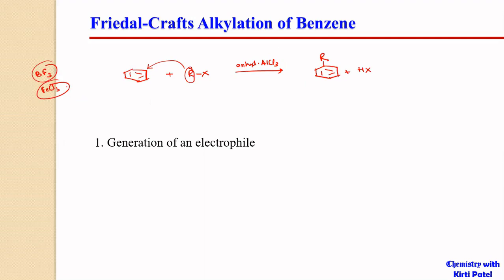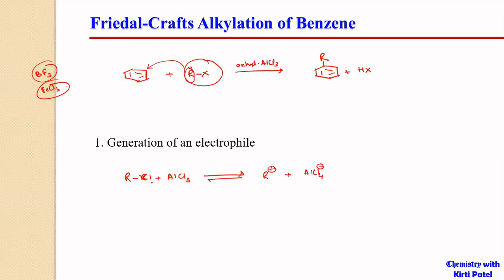The first step, as shown in previous electrophilic substitution reactions, is the generation of an electrophile. The generation of the electrophile involves the alkyl halide reacting with the catalyst. If alkyl chloride (RCl) reacts with AlCl3, we will get R+ and AlCl4−. This is a reversible reaction.